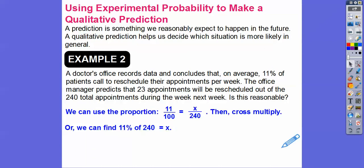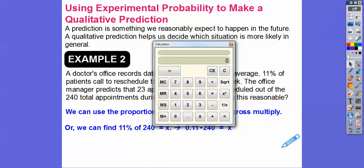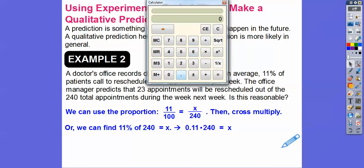So we can use a proportion. 11 out of 100 equals x out of 240. Then cross multiply. That's the way your book will probably do both methods. To me, it's much easier just to do 11%. So 0.11. Remember, the decimal is right there. So we're going to move it two places to the left. So 11% is the same as 0.11 times of means times 240. So 0.11 times 240, and I get 26.4.